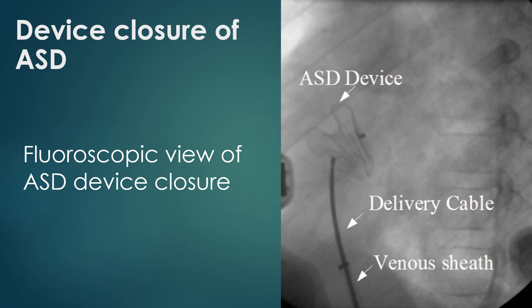This is the fluoroscopic image of an ASD device being delivered using a delivery cable introduced through femoral sheaths. Once the device reaches the left atrium, the left atrial disc is released first and brought into contact with the left atrial side of the ASD. When the position is ideal, the right atrial disc is allowed to form by withdrawal of the sheath. Once the two discs are in position with the waist across the ASD, slight wiggling is done to confirm secure fitting and no tendency for dislodgement.